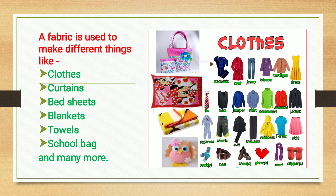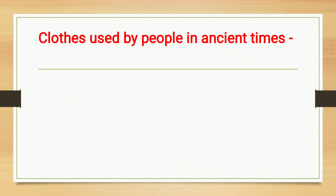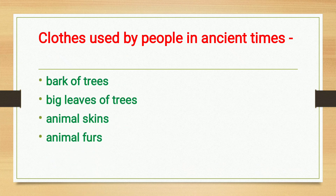A fabric is used to make different things like clothes, curtains, bed sheets, blankets, towels, school bags, and many more. Clothes used by people in ancient times were made from bark of trees, big leaves of trees, animal skins, and animal furs.